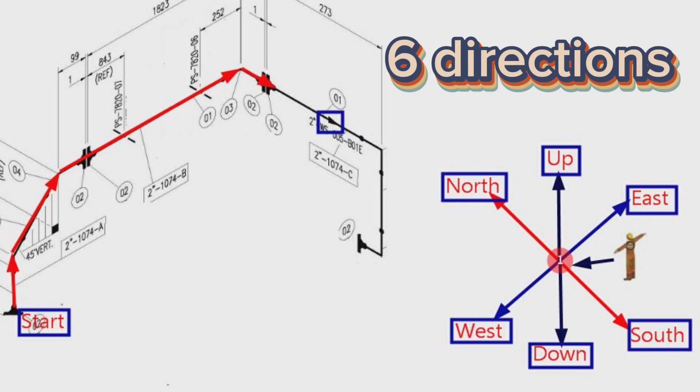At this point pipeline traveling to the south direction. Then, the pipeline moving to the down direction. At last, the pipeline here turns to the north direction. So, the correct reading of the pipe drawing is completed.